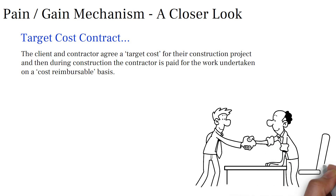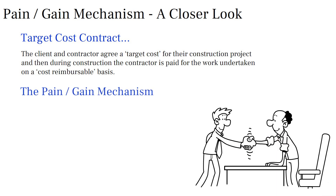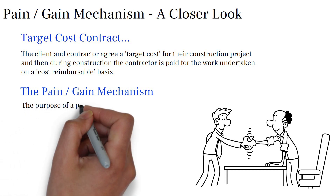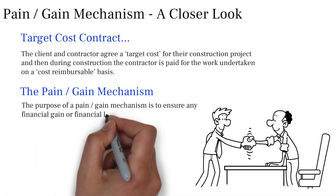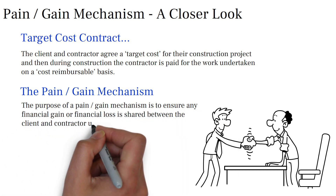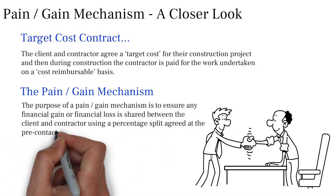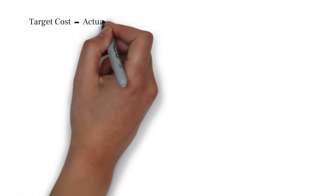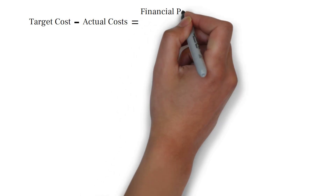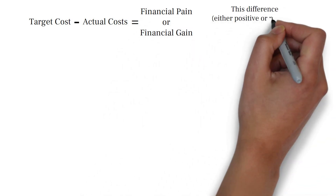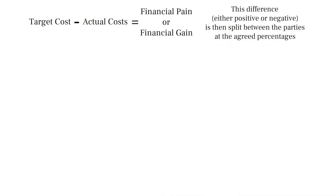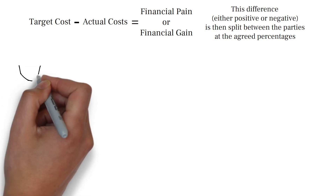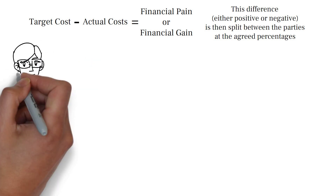So, where does pain and gain come in and how is it applied to such a contract? Essentially, the purpose of a pain gain mechanism is to ensure any financial gain or financial loss is shared between the client and contractor using a percentage split agreed at the pre-contract stage. This is calculated by taking the agreed target cost and deducting the actual cost incurred throughout the length of the project. The difference is then split between the parties by the agreed percentages. The agreed target cost may of course increase or decrease due to variations during the project through compensation events. Financial pain or gain is usually calculated once works are complete and reflected in the final payment and final account.